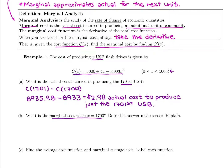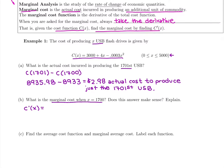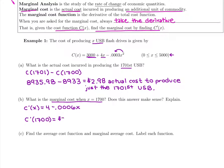We'll plug in 1,700 and see if it approximates the 1,701st cost we already calculated. To find marginal cost, we take the derivative C prime of X. The derivative of 3,000 is 0, derivative of 4X is 4, and bringing down the power: 0.0003 times 2 gives minus 0.0006X. Plugging in 1,700: we compute 4 minus 0.0006 times 1,700.